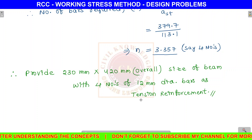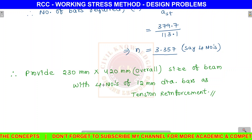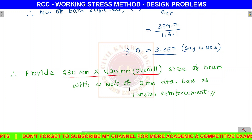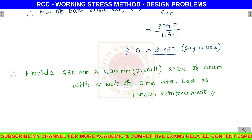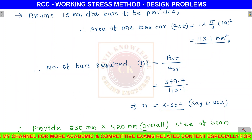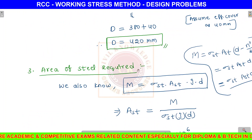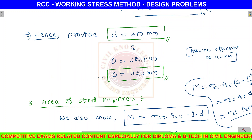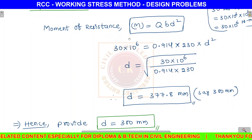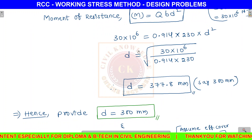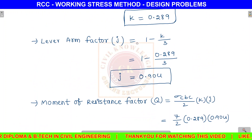The result: provide a 230 mm by 420 mm beam with 4 numbers of 12 mm diameter steel bars as tension reinforcement. A design sheet will be available for download via the link in the description. That's it for this class. In the next class, more design problems will be covered. Thank you for watching.